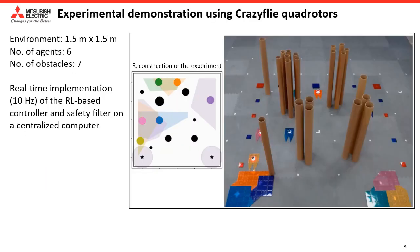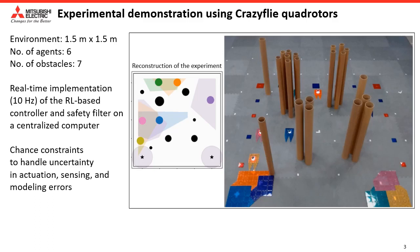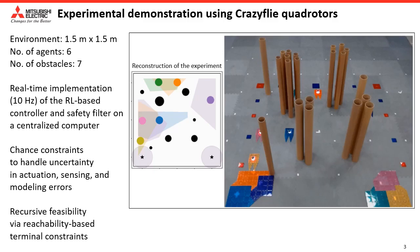We demonstrate the proposed motion planner for a team of six quadrotors in a cluttered environment with seven obstacles. We encode the safety requirements in the safety filter using chance constraints to tackle uncertainty from actuation, sensing and modeling errors. We achieve recursive feasibility via terminal constraints in the safety filter.